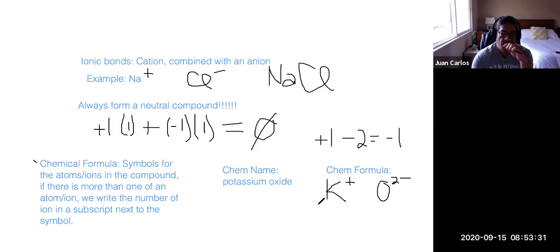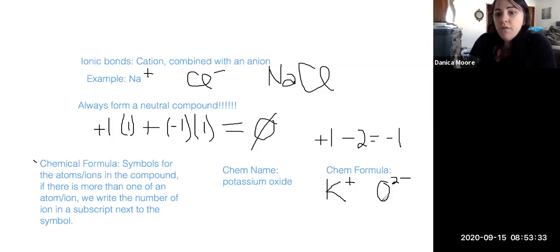So if I start off with one of each, then I'll end up with an overall net charge of negative one, which is not neutral. So if I want to make it neutral, how many of each of these guys do I need? Two potassium. Two potassiums for every one oxide.